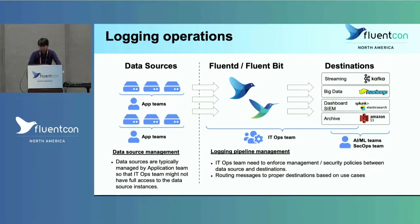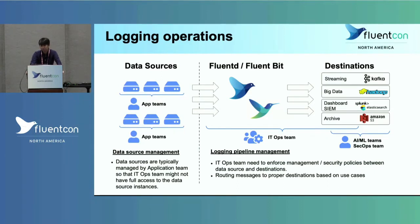From an operation perspective, there are also challenges for the IT operation team. In terms of data sources, data sources are typically managed by the application team, and the IT operation team does not have full access to the environment. Destinations are also managed by different teams. For instance, the AI and ML team manages the Hadoop environment for applications running on Spark, and the security operation team might manage Kafka, Splunk, and Elasticsearch for the same solution.